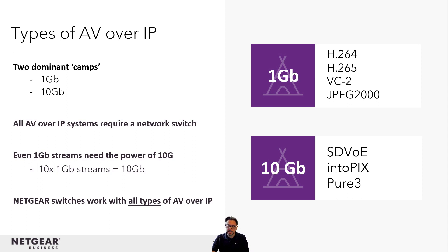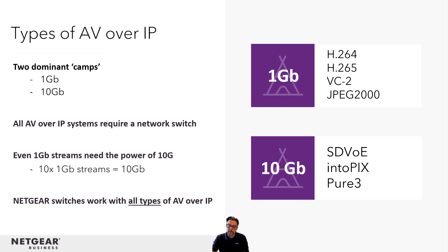There are several types of codecs used in these camps, and they all have their strengths and weaknesses. Some of these you may have heard, and some you may not, because vendors very often use their own proprietary name for those codecs. The point is that all these platforms require the use of a network switch, and even 1Gb platforms need 10Gb AV switch bandwidth — because stream 10 one-gig streams, and you're now in a 10Gb environment needing a high-performance switch.